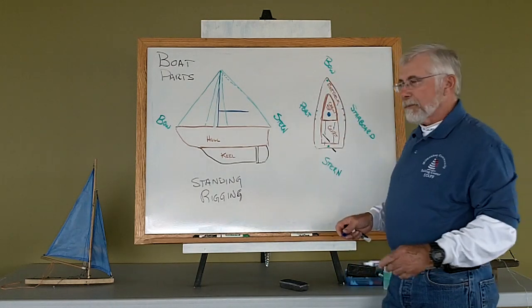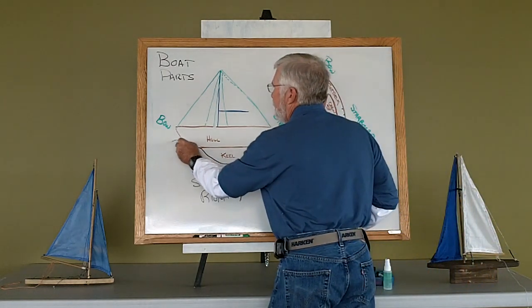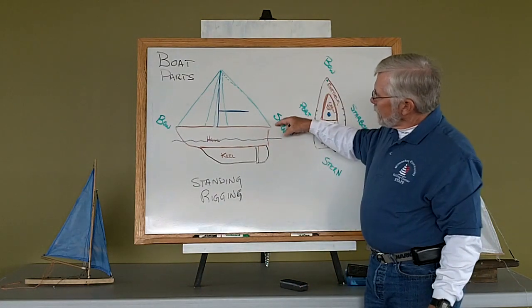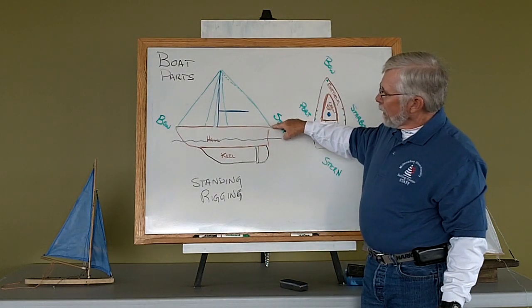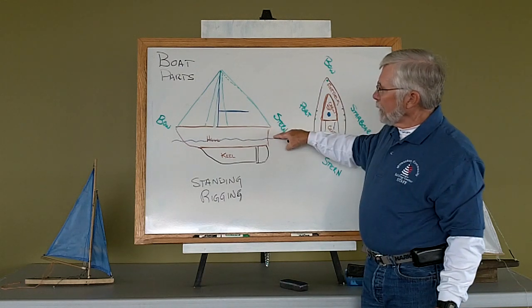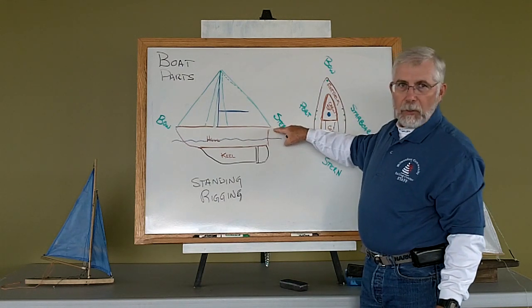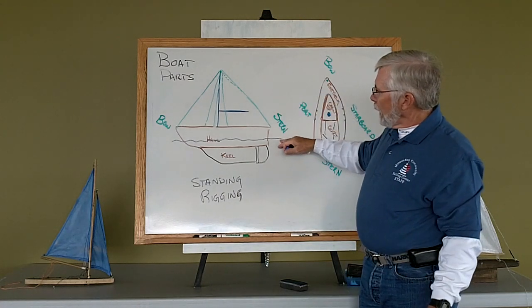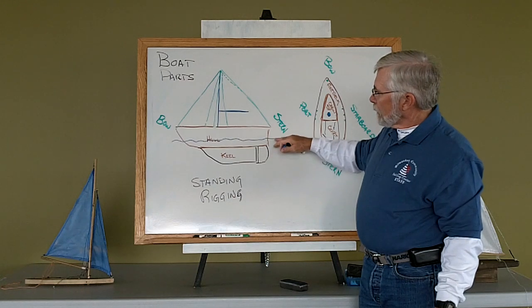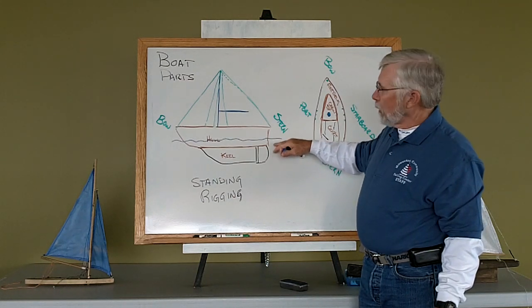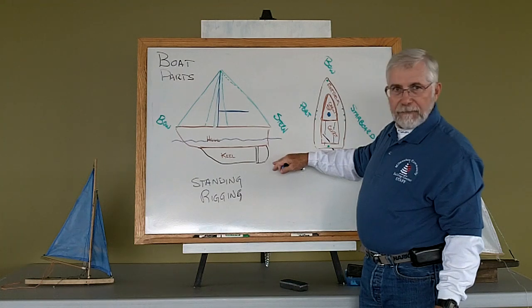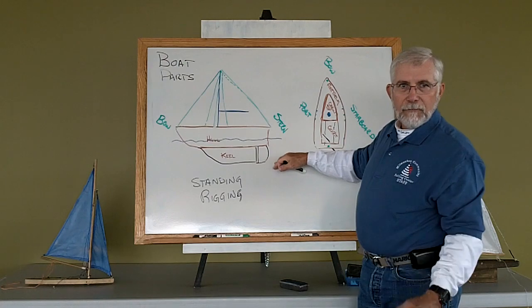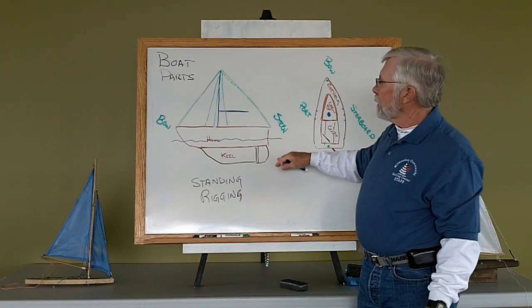When the boat is sitting in the water, the distance between the gunnels, the edge of the boat, and the water line is called our freeboard. It's the amount of free space we have above the water line. And the distance that the boat sits down in the water is called how much draft it draws. It's called the draft. So it could be three foot, three and a half, four foot, depending upon the size of the boat.